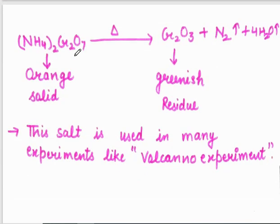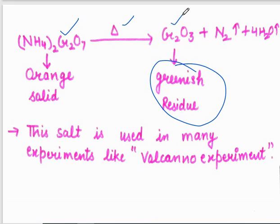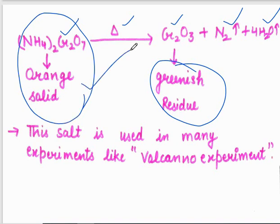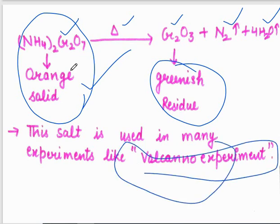Next is ammonium dichromate, (NH4)2Cr2O7. It is an orange color crystalline solid. On heating, it gives a greenish color residue of chromium trioxide, along with release of N2 gas and 4 water molecules. This salt is famously used in the volcano experiment, which you may have seen in science exhibitions, where substances erupt out like a volcano.